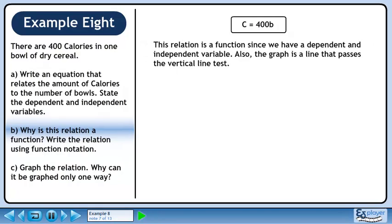This relation is a function since we have a dependent and independent variable. Also, the graph is a line that passes the vertical line test. We can write this in function notation as C of B equals 400B.